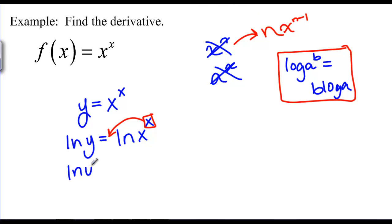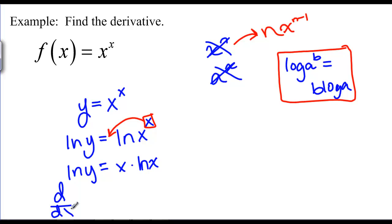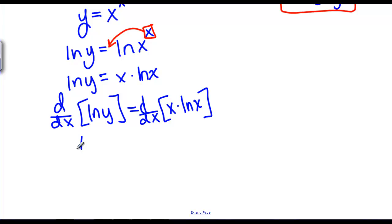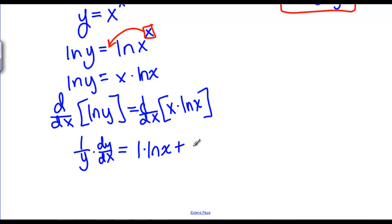We have natural log of y equals x times natural log of x. Now we know how to take the derivative of both sides with respect to x. The derivative of natural log of y is 1 over y times dy/dx, and the derivative of x times natural log of x requires the product rule: the derivative of x is 1 times natural log of x unchanged, plus x unchanged times the derivative of natural log of x, which is 1 over x.